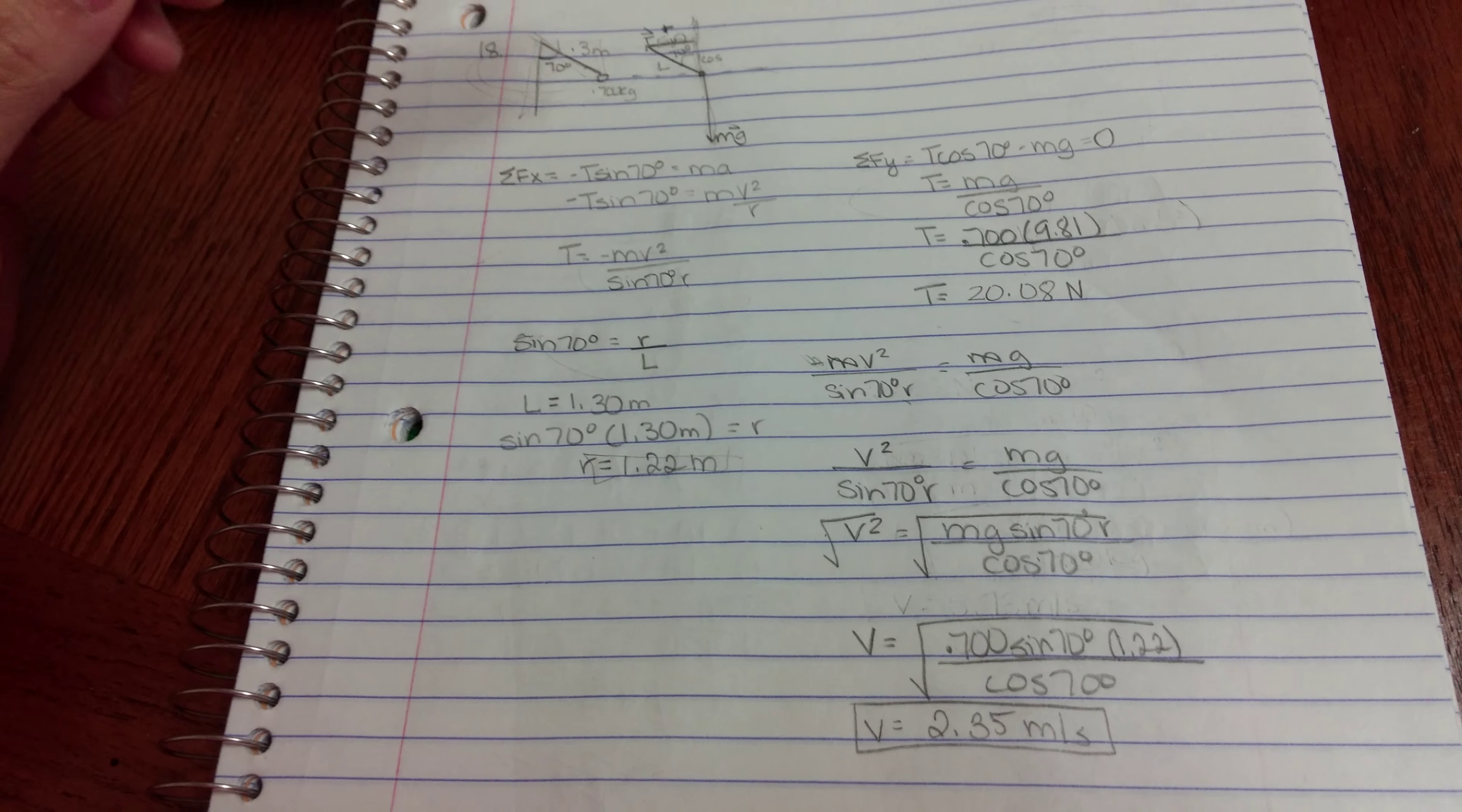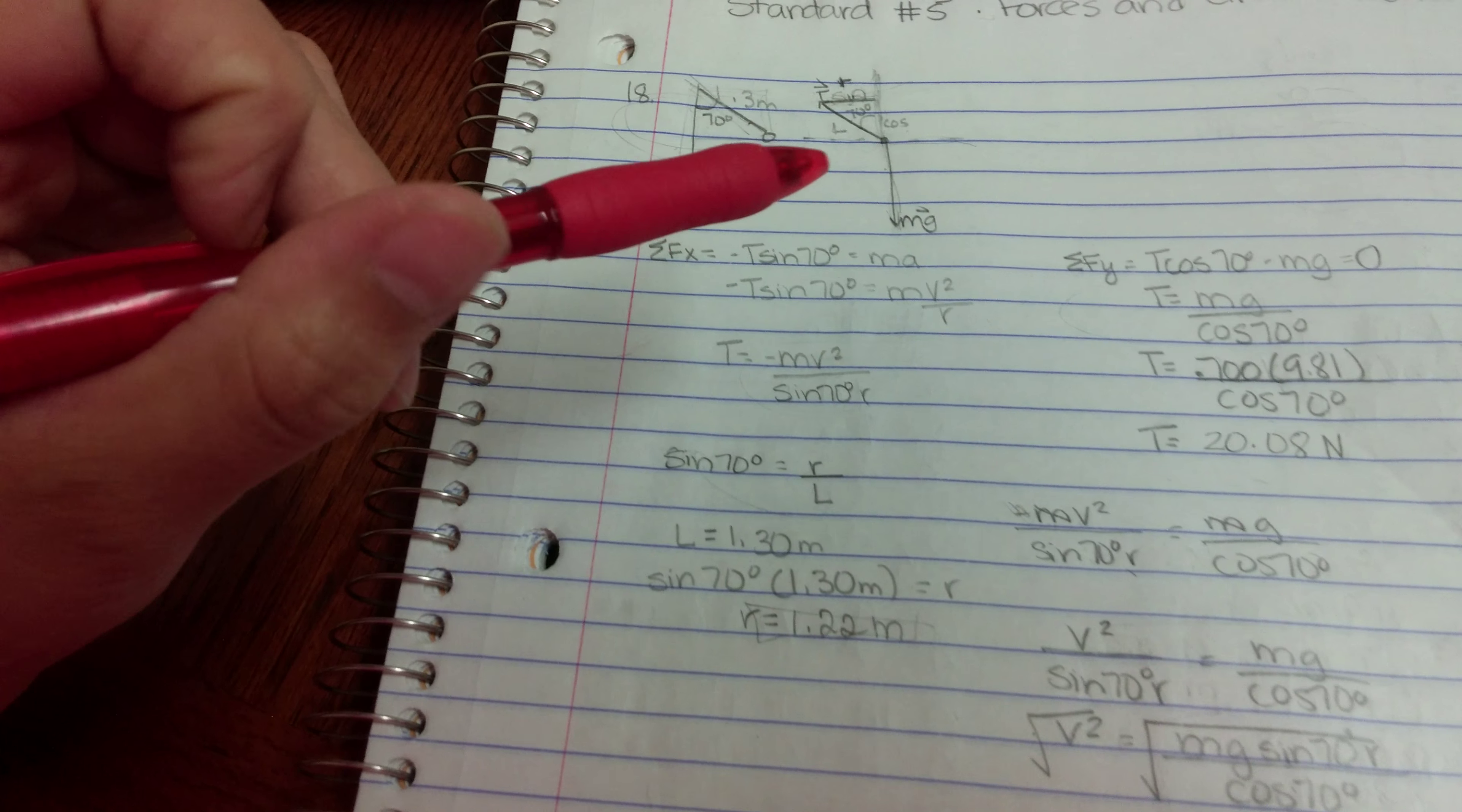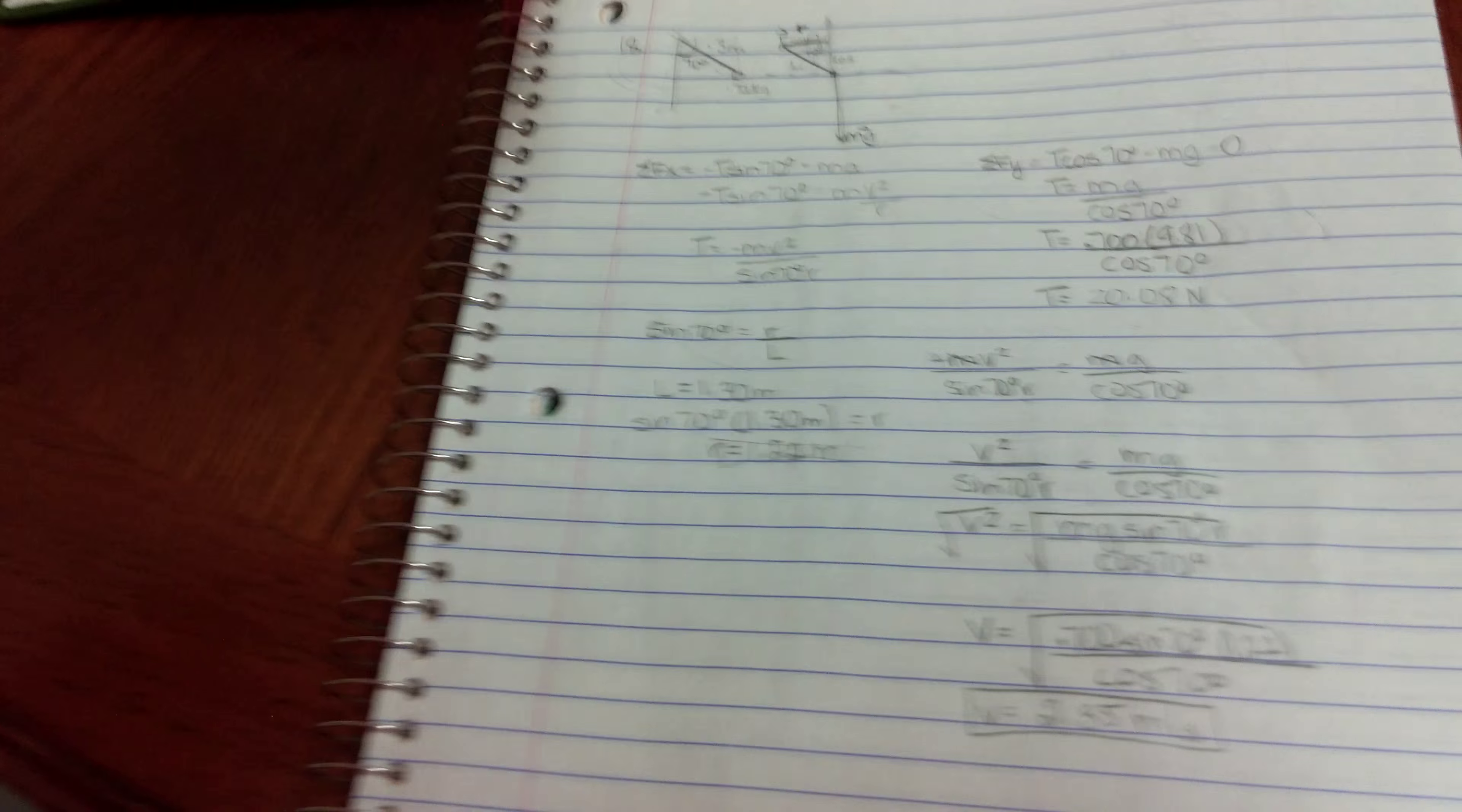And then all of my x direction, I have the tension, which is negative x direction. So I have negative tension times sine of 70. And since it's accelerating in the x direction, because it says it rotates to the pole's symmetrical axis, and then the angle was respect to the vertical, so I know that my acceleration is in x direction. So I know it's linear. Because it's not going like following the angle, it's going around the pole.